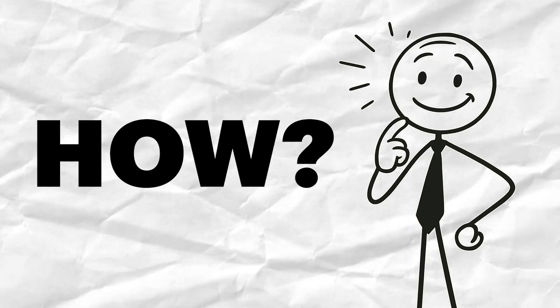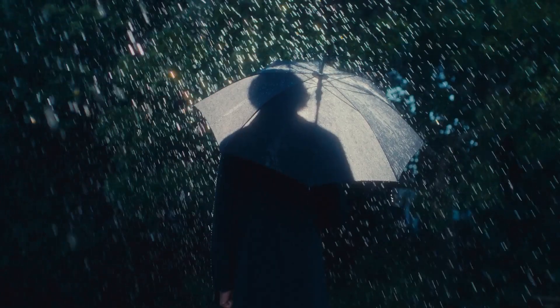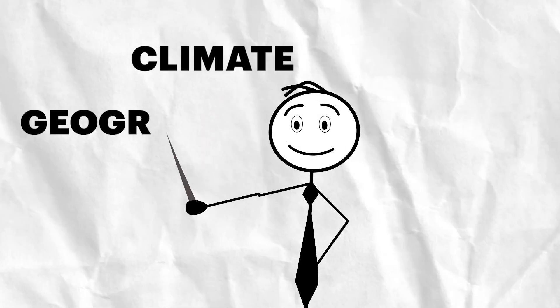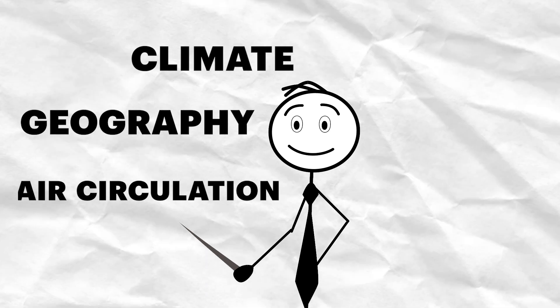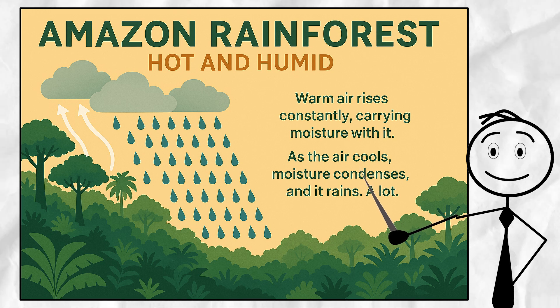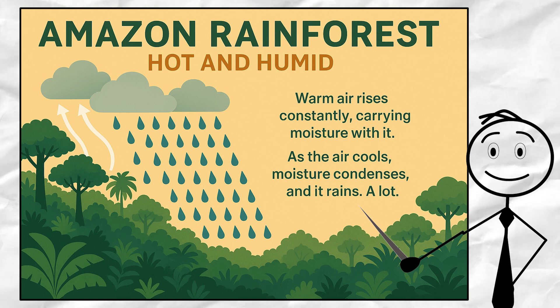So, now that we know the how, let's talk about the why. Why do some places get rain all year while others barely see a drop? It all comes down to climate, geography, and air circulation. Take tropical regions, for example, like the Amazon rainforest. These places are hot and humid. Warm air rises constantly, carrying moisture with it. As the air cools, moisture condenses, and it rains a lot.